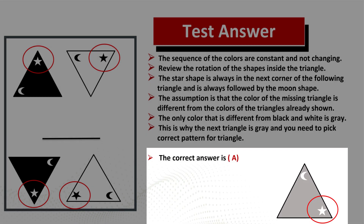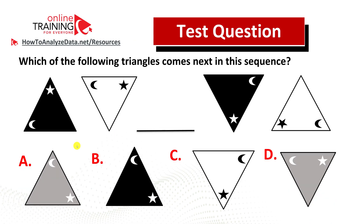The assumption is that the color of the missing triangle is different from the colors already shown. The only color different from black and white is gray, so the next triangle is gray. There are two gray triangles — choice A and choice D — but there is also a third pattern: the pattern of pointing. The first triangle points upward, the second points down, so the next triangle points up. The only gray triangle pointing up is choice A.